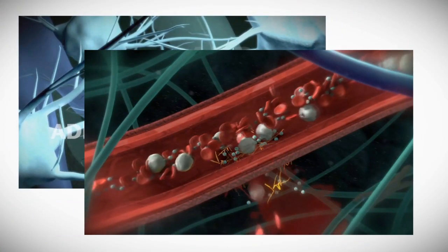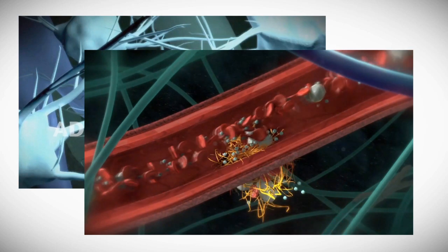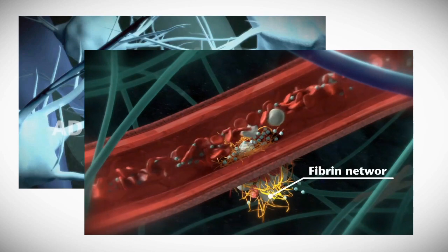Simultaneous to the process of platelet aggregation or primary hemostasis, the process of secondary hemostasis unfolds, which leads to the formation of a fibrin network.